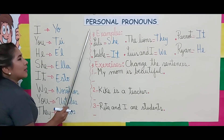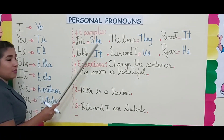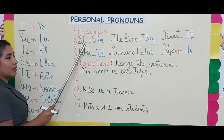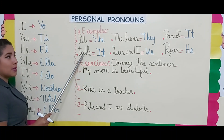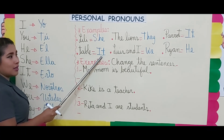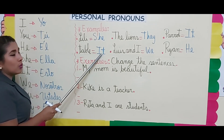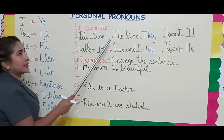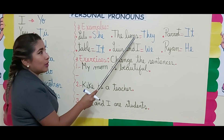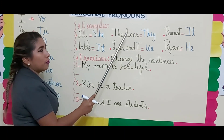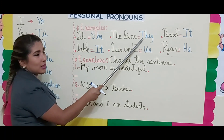Here we have some examples. Aquí tenemos algunos ejemplos. Lily is she. Table is it — mesa is it. Recuerda que it siempre se reemplaza por un objeto o un animal. The lions is they, because the lion is a group of animals. Porque los leones es un grupo de animales, por eso utilizamos they.